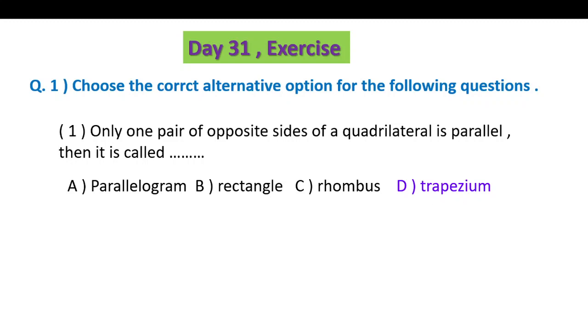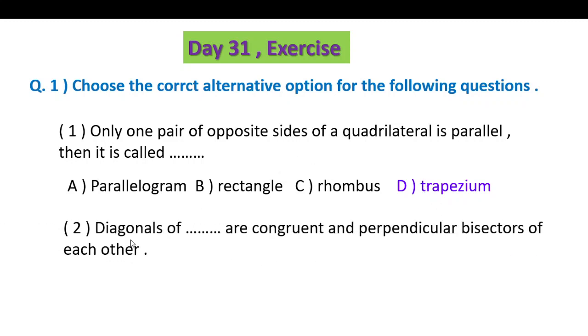Second: Diagonals of which shape are congruent and perpendicular bisector of each other? Whose diagonals are congruent? Rectangle's diagonals are also congruent but they are not perpendicular bisector. Whose diagonals are perpendicular and bisector? Square. Our answer is square.